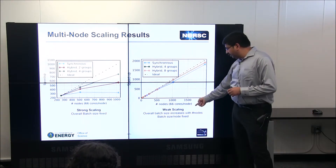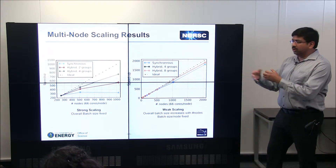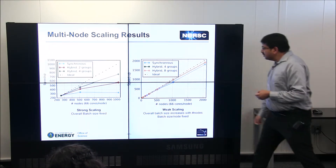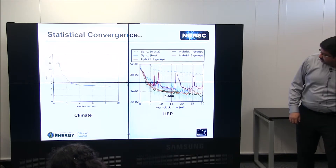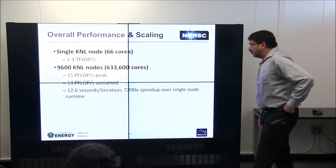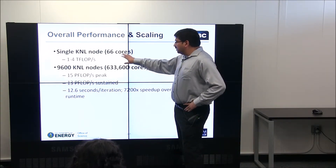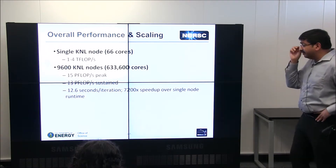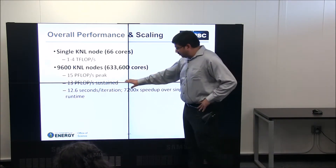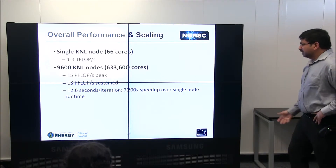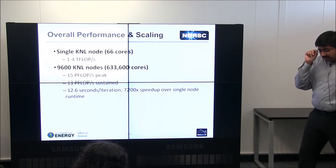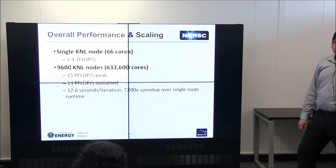In weak scaling, you increase the problem size as you add more nodes. The synchronous approach does scale, but the hybrid scales a little better. Overall, on a single KNL node we get one to four teraflops, which is competitive. On the entire machine — 9,600 KNL nodes — we achieve 13 petaflops sustained and 15 petaflops peak, a significant speedup compared to a single-node implementation. I believe this is the most scalable deep learning solution at this point in time.